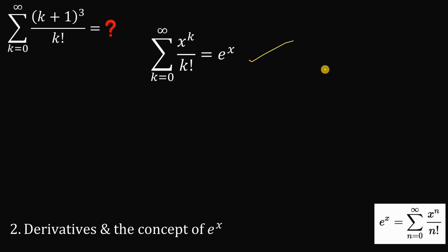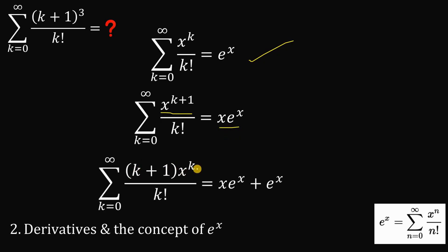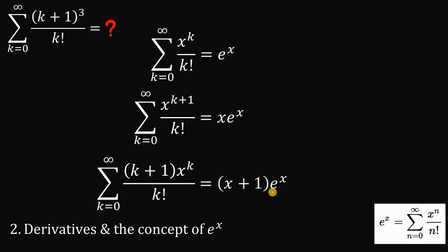Take the derivative on both sides. Using the power rule on the left and the product rule on the right: we get Σ(k+1)·x^k/k! = (x+1)·e^x. Now multiply both sides by x again: Σ(k+1)·x^(k+1)/k! = (x²+x)·e^x. Take the derivative again using the product rule: Σ(k+1)²·x^k/k! = (x²+x)·e^x + e^x·(2x+1). Factor out e^x to get (x²+3x+1)·e^x.